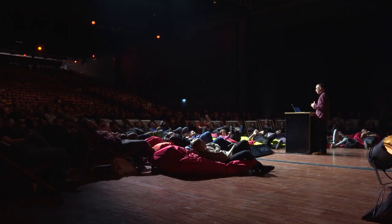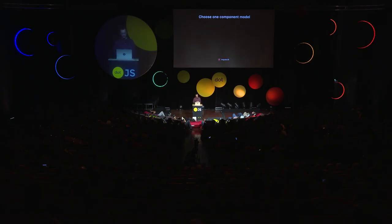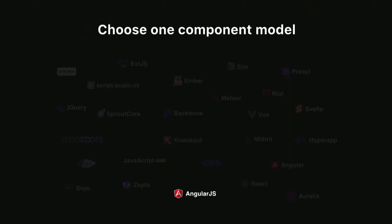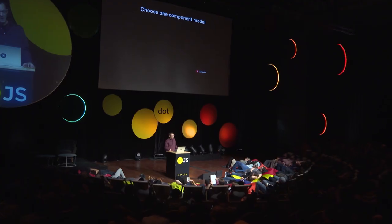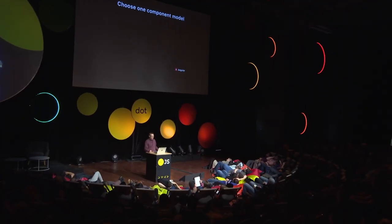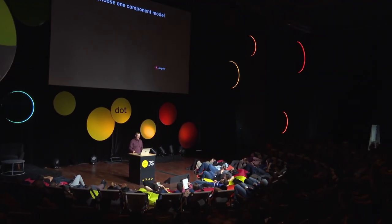You basically need to choose one component model that also matches the same framework as your consumers. In our first version of Ionic, we had to choose AngularJS, and it was a great decision. Then the next version of Angular came out, and we naturally jumped on that and wanted to be a part of Angular's improvements. The problem was that with all that work we put into the original components, they needed to be refactored. Ionic 2 did see many improvements and fixes, but none of those were available to the Ionic 1 users.